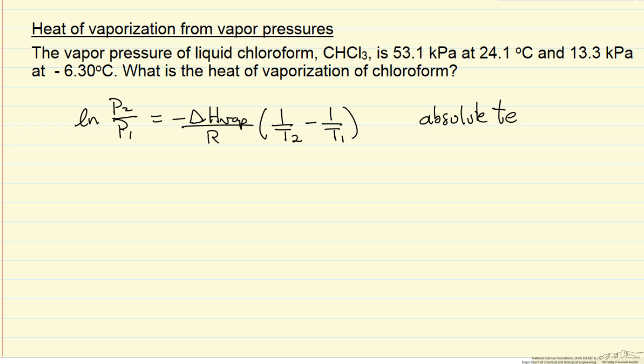these have to be absolute temperatures. So 24.1°C, we're going to add 273.2 to get temperature in Kelvin, and minus 6.3, we'll add 273.2.